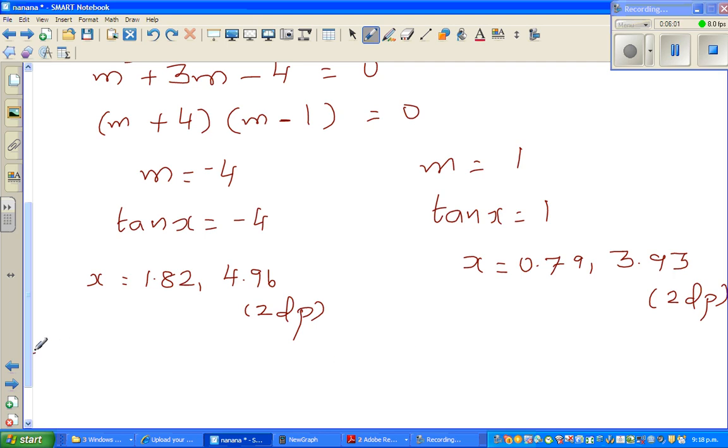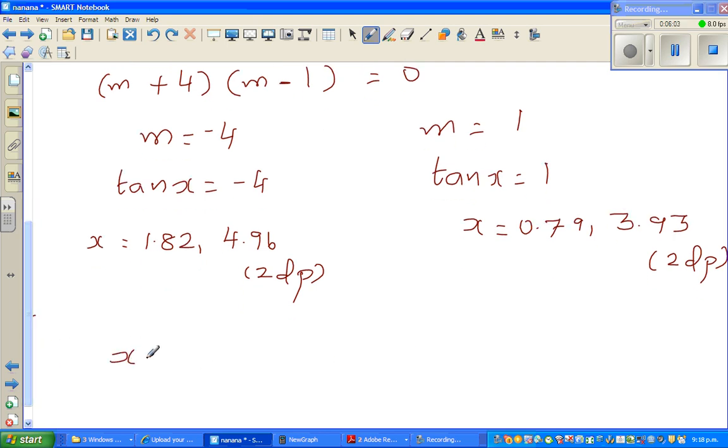You've got four answers. Let's write all the answers in order. So the answers in order are: 0.79, 1.82, 3.93, and finally 4.96. All of them in 2 decimal places. See you in the next one.